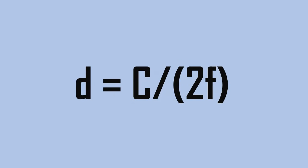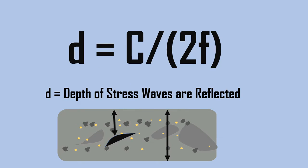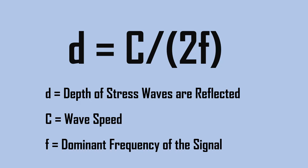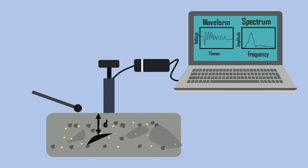The fundamental equation of impact echo is d = c / 2f, where d is the depth from which the stress waves are reflected, that is the depth of a flaw or the thickness of a solid structure. c is the wave speed which is given by the device manufacturer. f is the dominant frequency of the signal, that is a peak in the frequency gap. Thus, by determining the d value, the presence of flaws in the concrete structure is calculated.